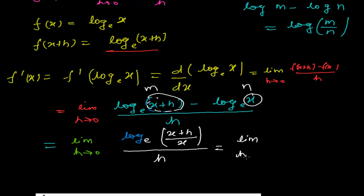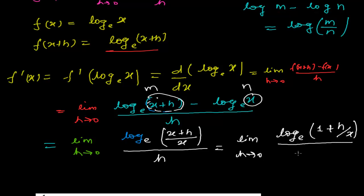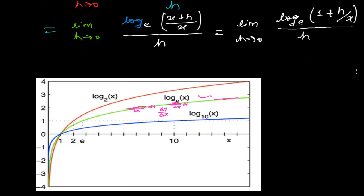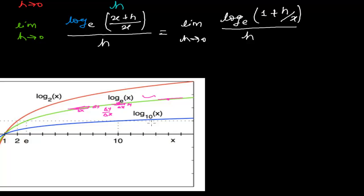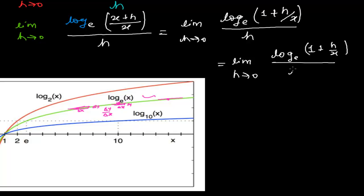Now again, the limit when h tends to 0. When I separate (x + h)/x, I get log_e(1 + h/x), all divided by h.